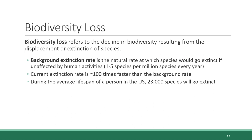Conservation agencies within and across countries are trying to keep track of species that are at risk for extinction so that intervention can be made before it's too late. There is a classification system used by an organization called the International Union for Conservation of Nature, or the IUCN, which categorizes each species based on how urgent the level of concern is for its continued existence.